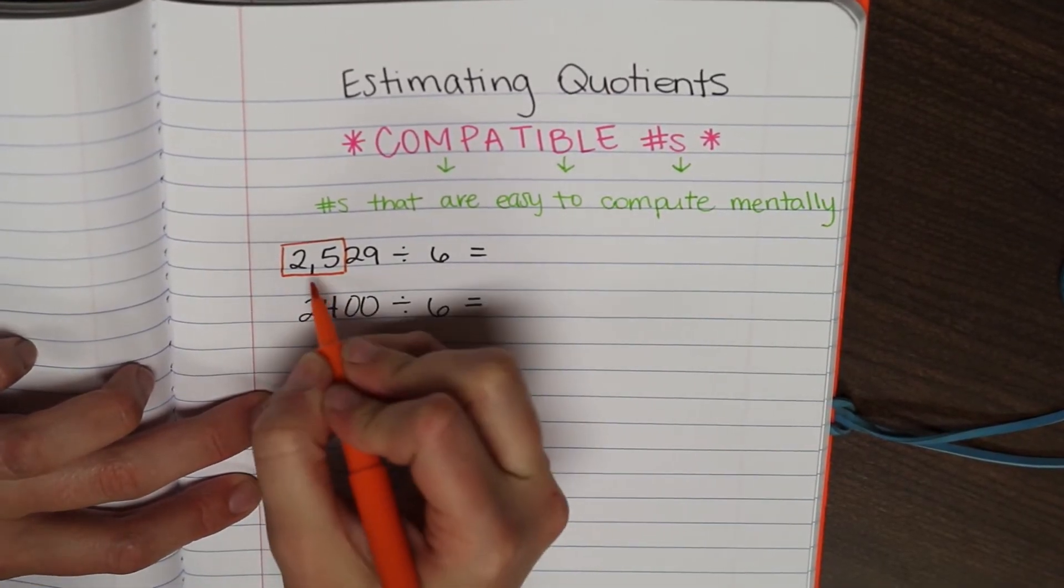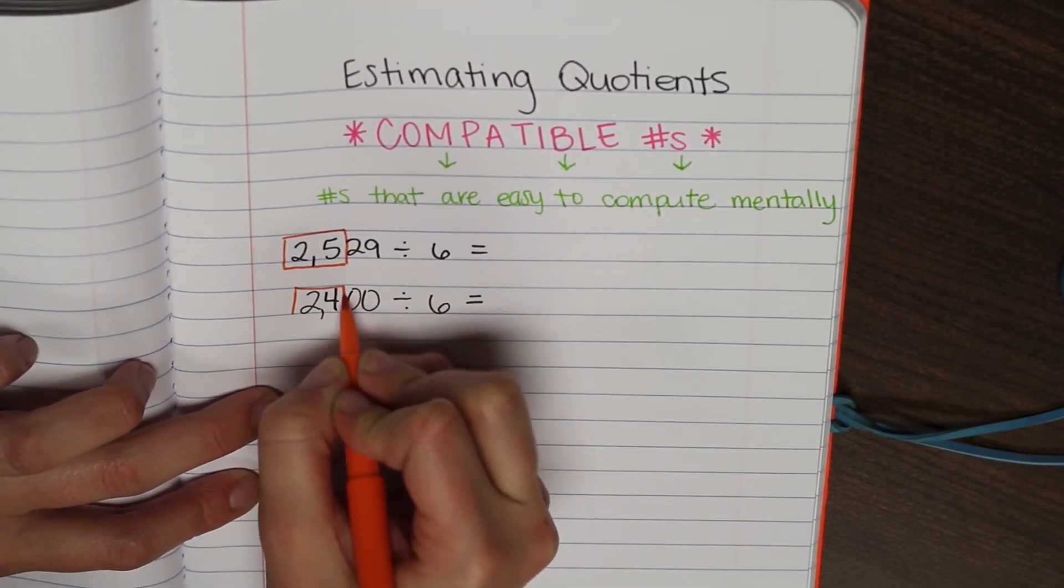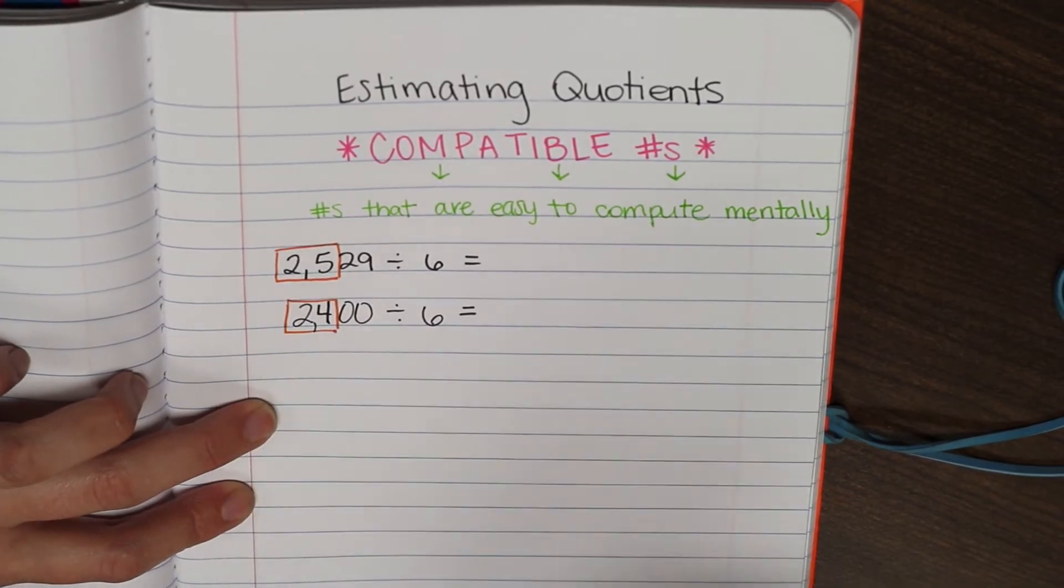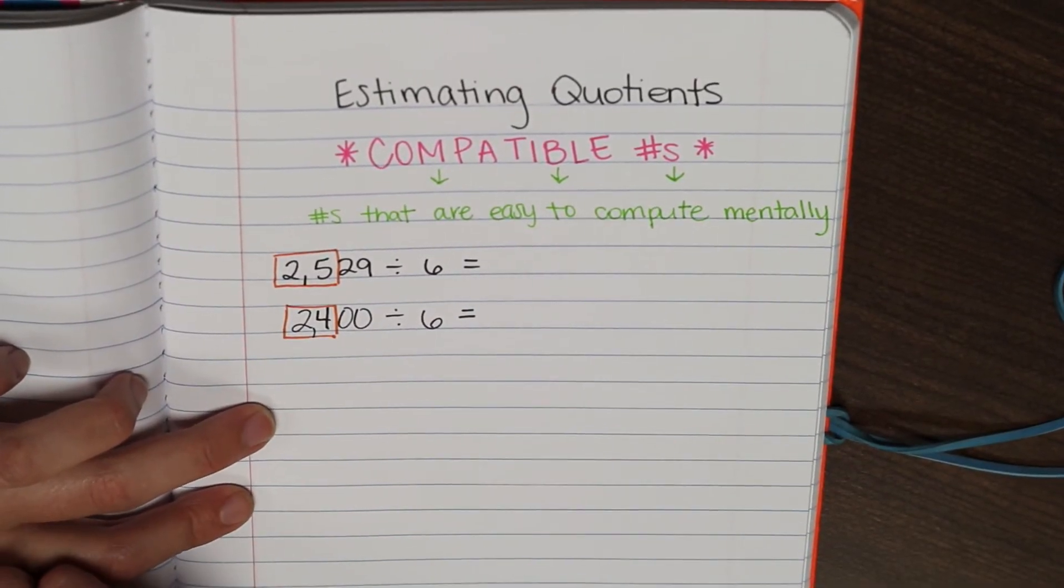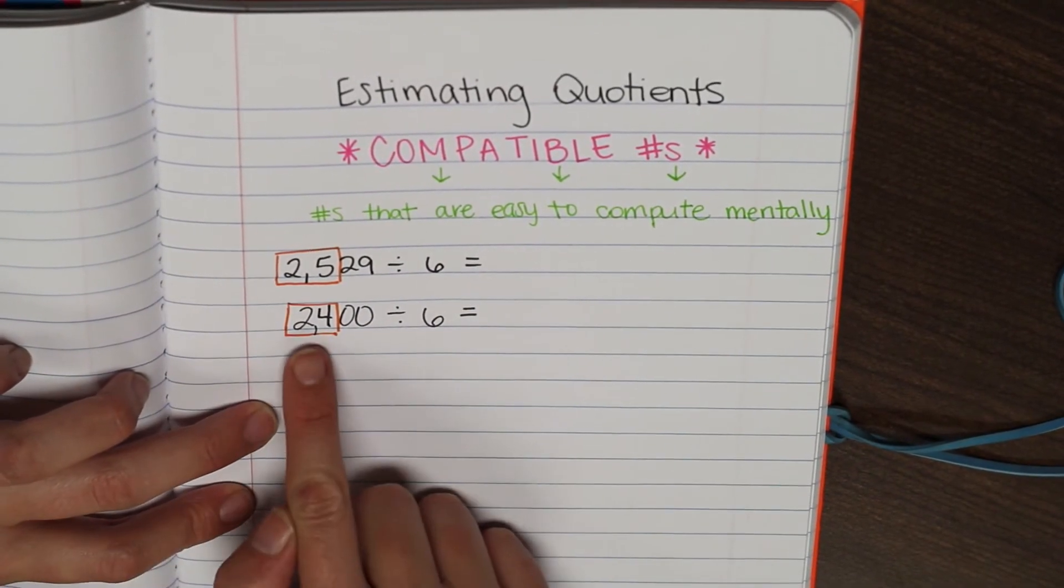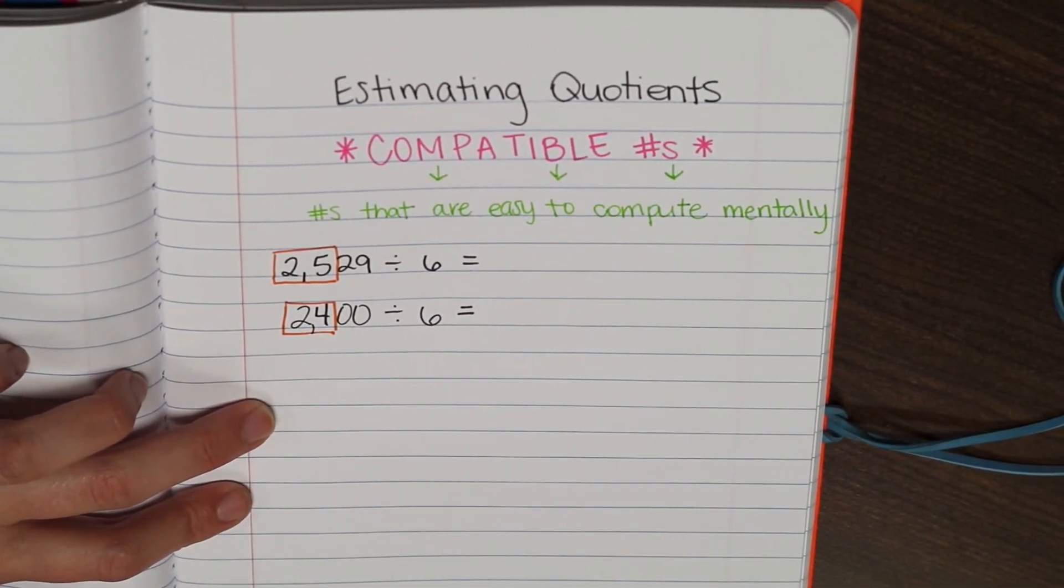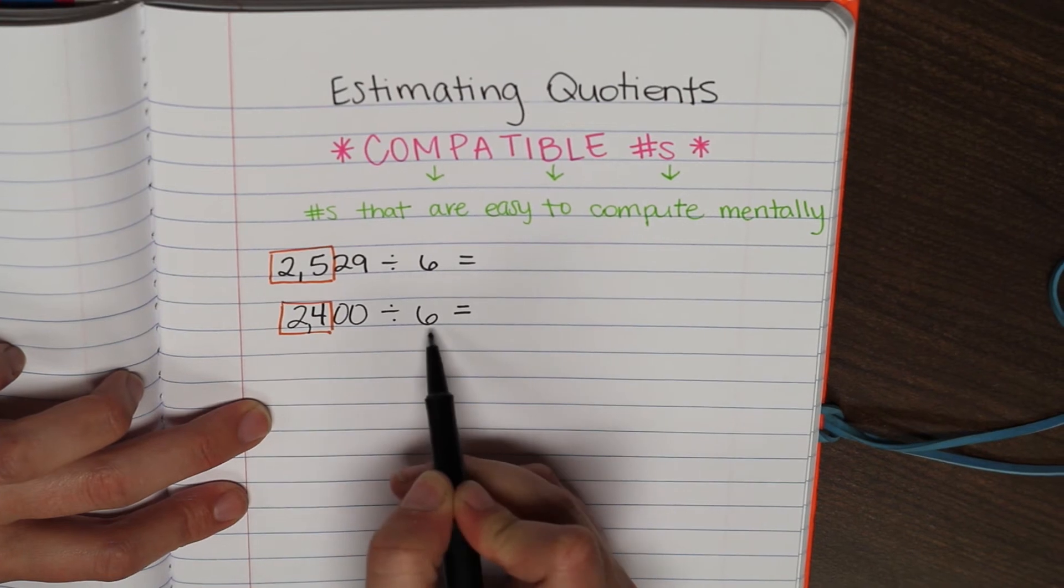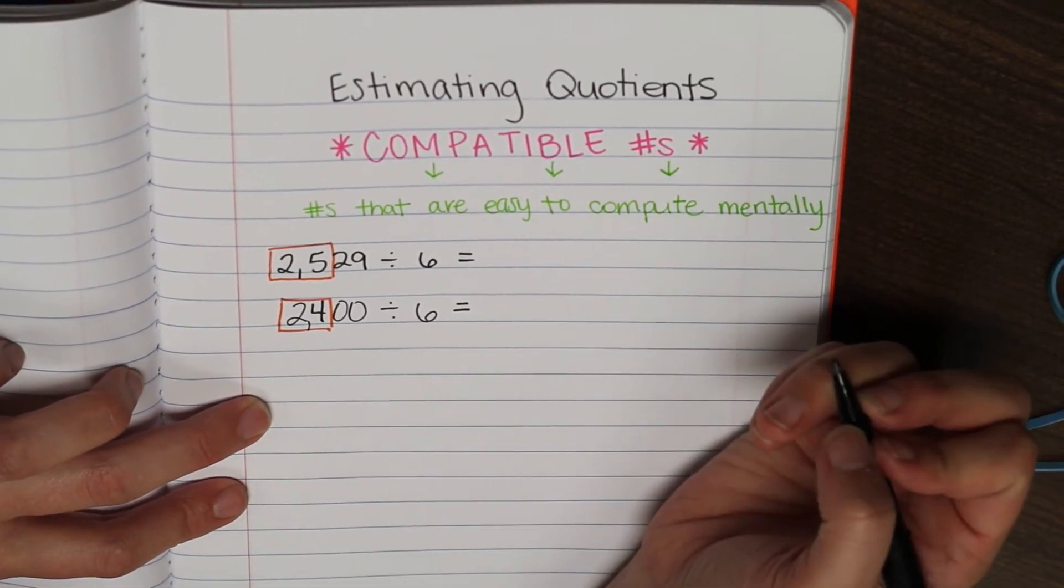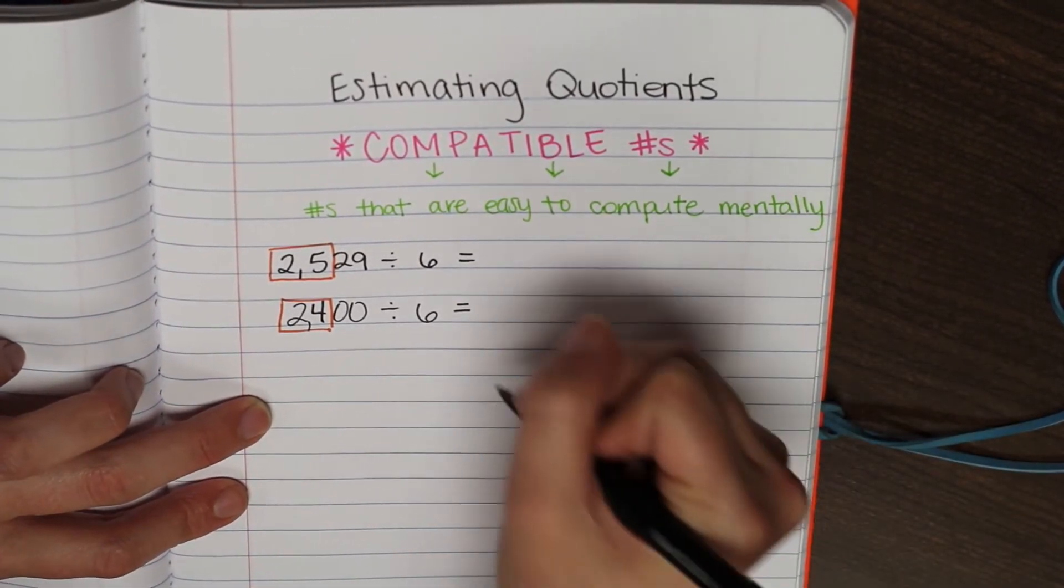Now, my original number was 25, but now put a box around 24. Okay? Our new divisor of 24 is easily divisible by 6. 24 divided by 6 is, that's right, 4.